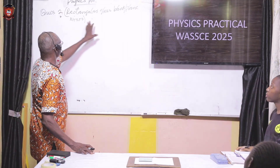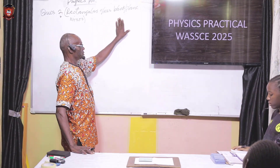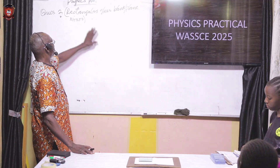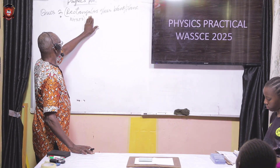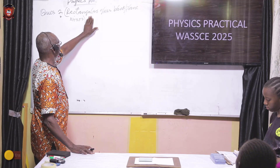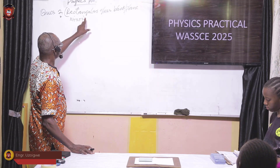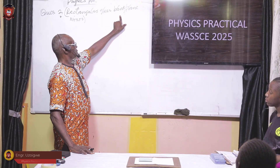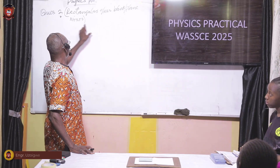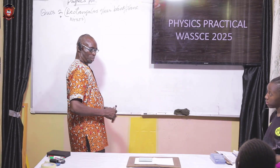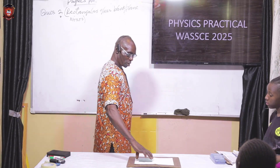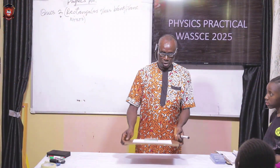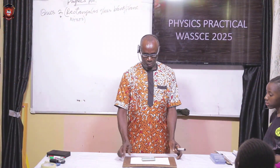For question number two, you are provided with a rectangular glass block, a plain mirror, a drawing board, and drawing paper.